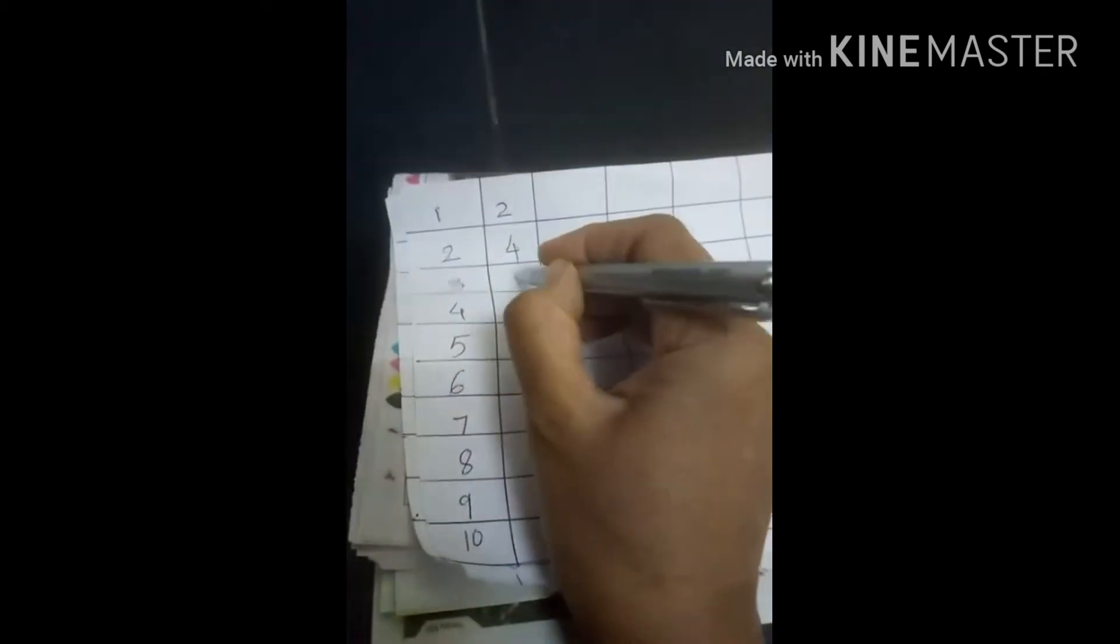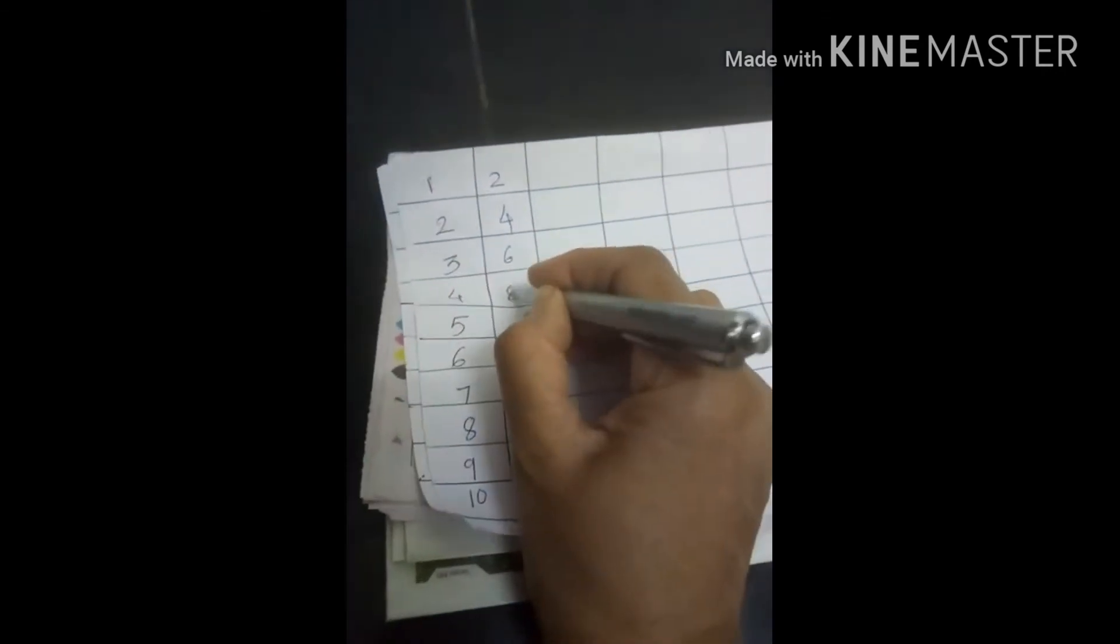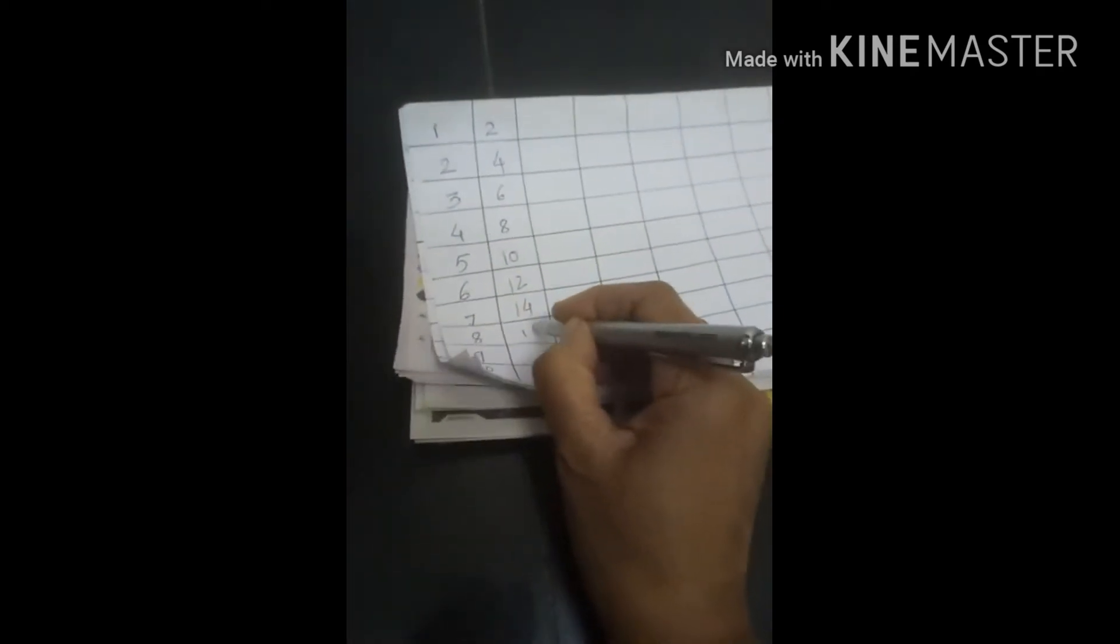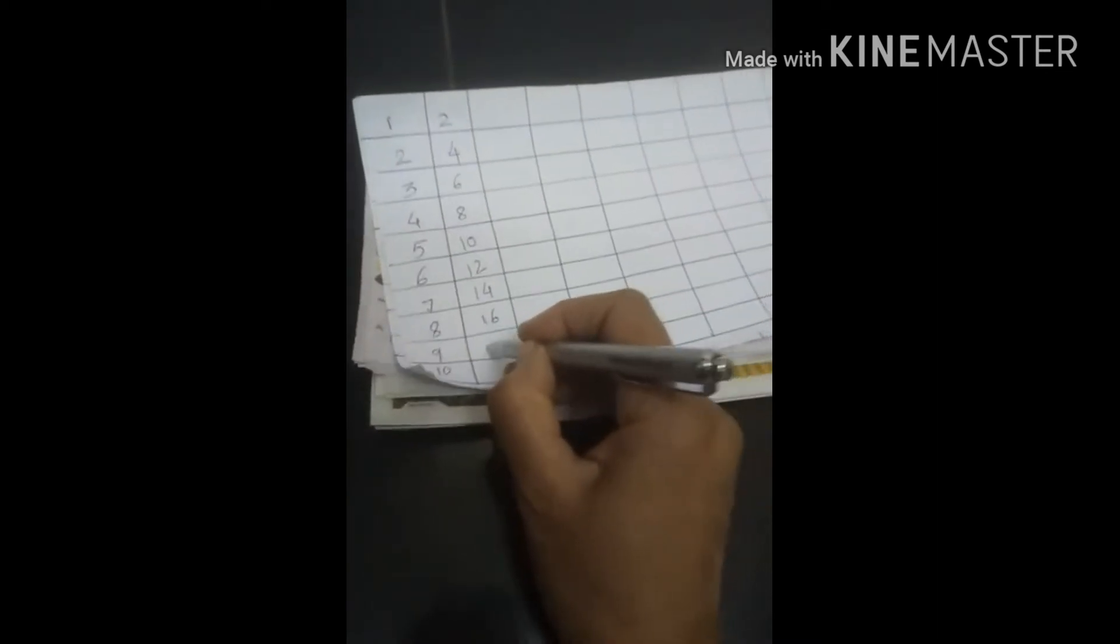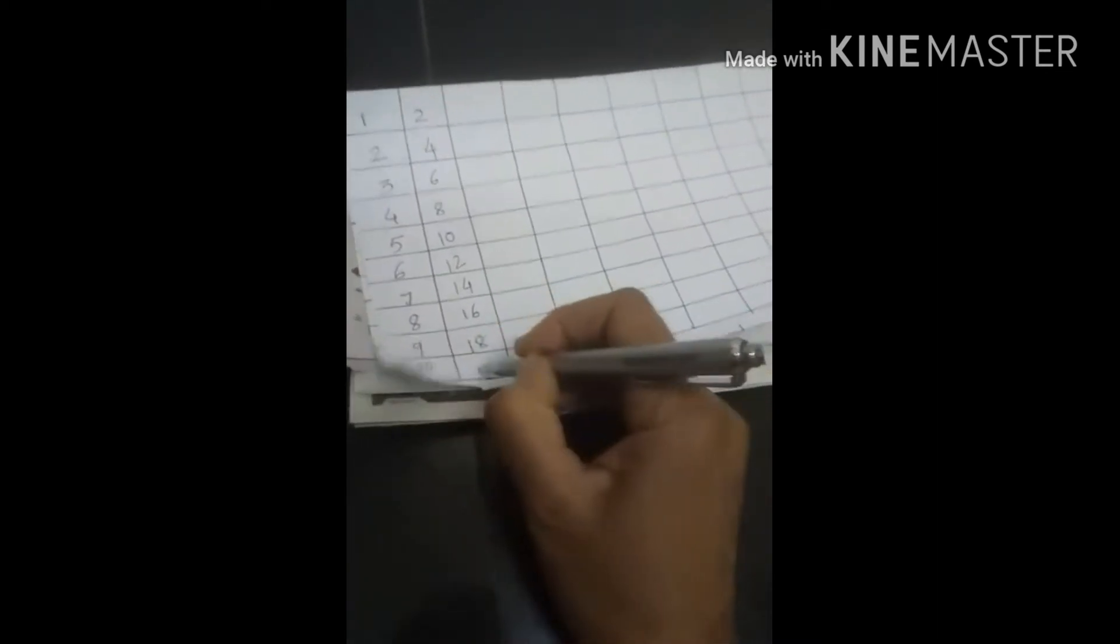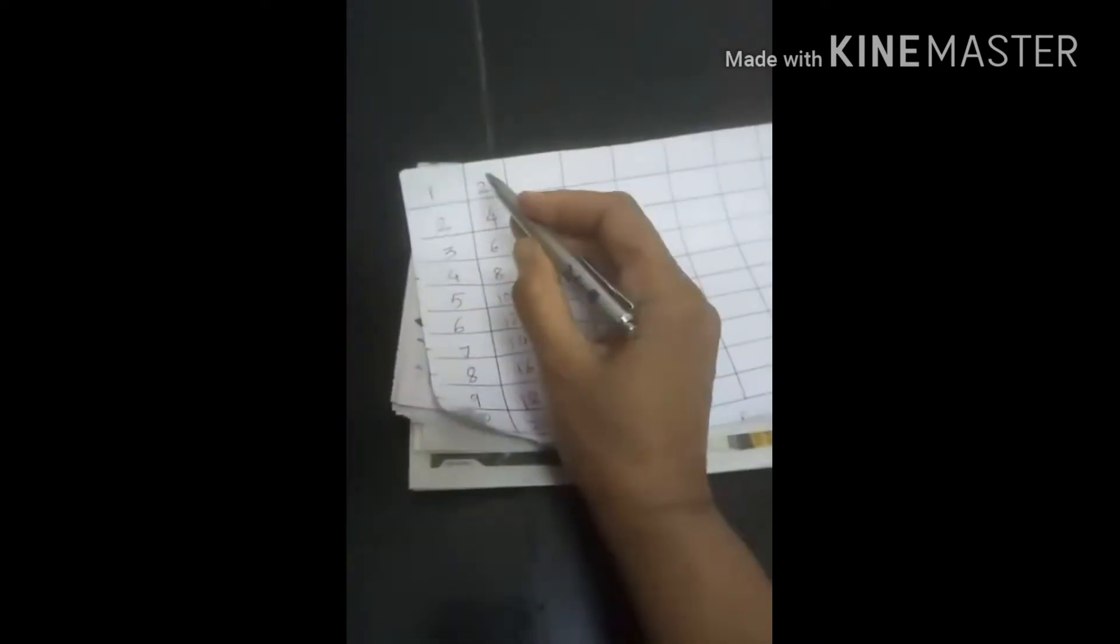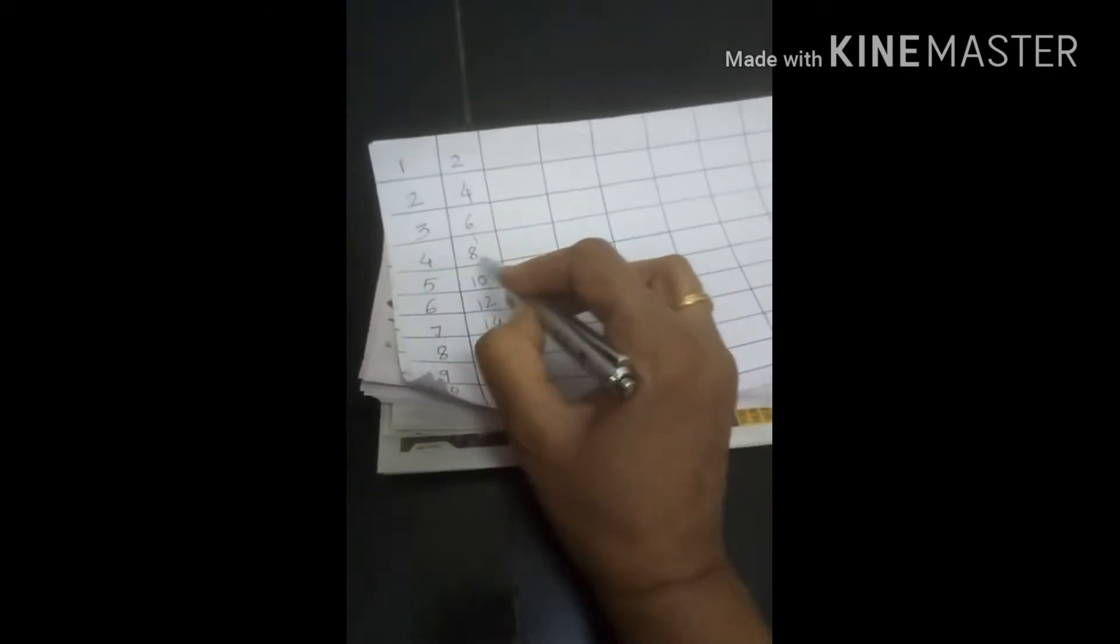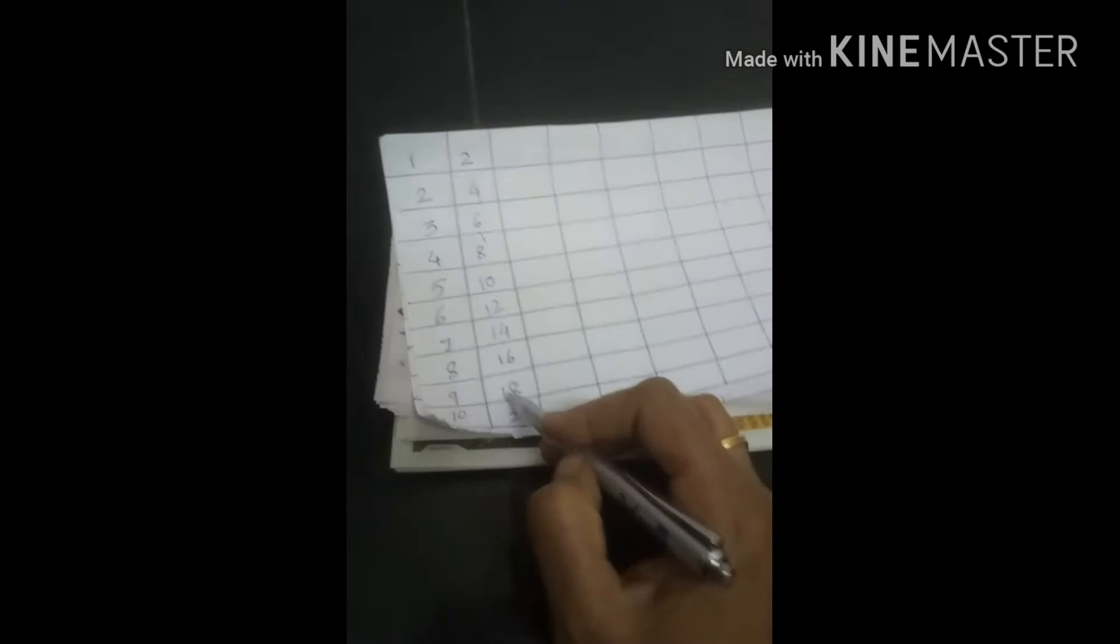1, 2, 3, 4, 5, 6, 7, 8, 9, 10, 11, 12, 13, 14, 15, 16, 17, 18, 19, 20. See, 2 twos are 4, 2 threes are 6, 2 fours are 8, 2 fives are 10, and so on. Same way table of 3.